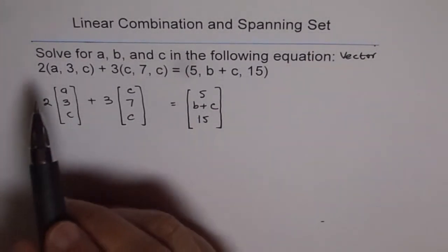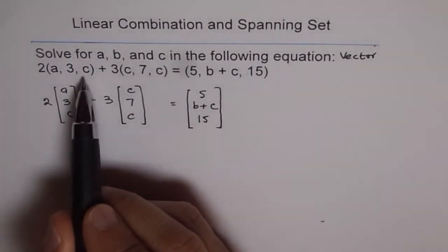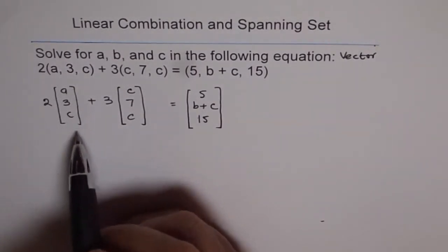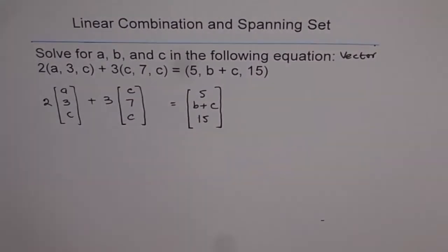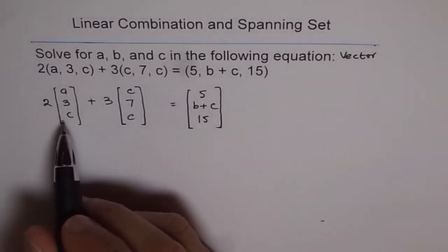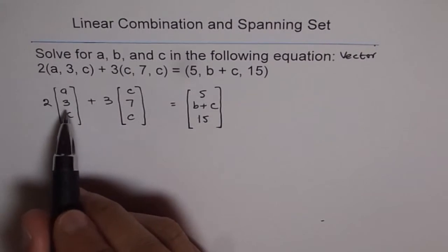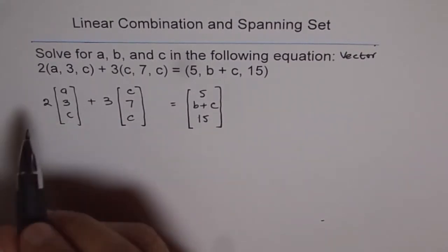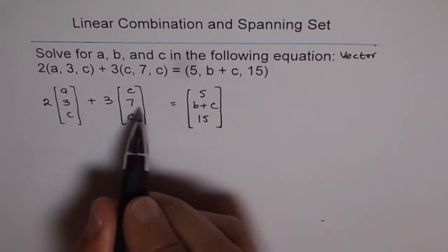What we really do is, these direction numbers are written in a column form with this matrix kind of a notation on the sides. Now, we will do the algebraic operations on this. This basically is a scalar multiplication. So, we can multiply each component and add them up.